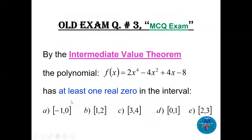Now, using the Intermediate Value Theorem — also a multiple choice question — we have a degree-4 polynomial 2x to the fourth minus 4x squared plus 4x minus 8. We need to find at least one real zero between which pair of integers: minus 1 and 0, 1 and 2, 3 and 4, 0 and 1, or 2 and 3?